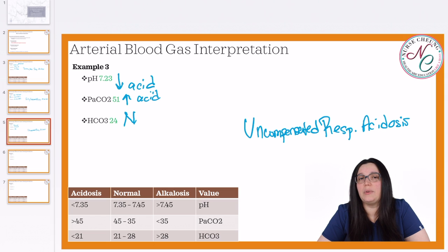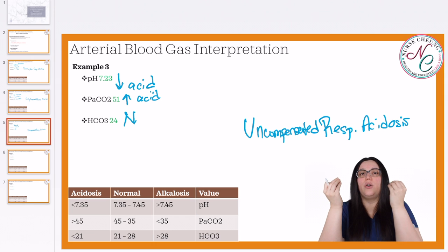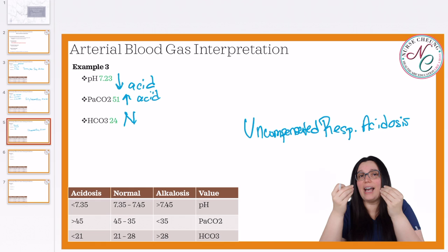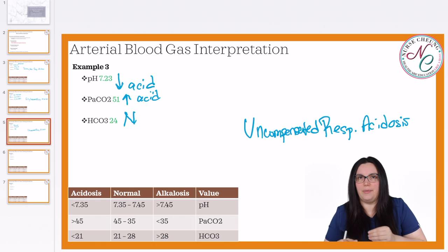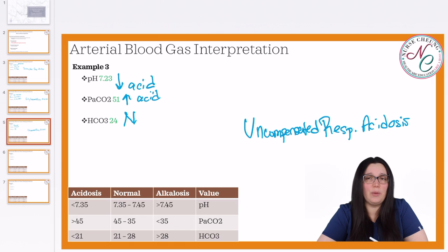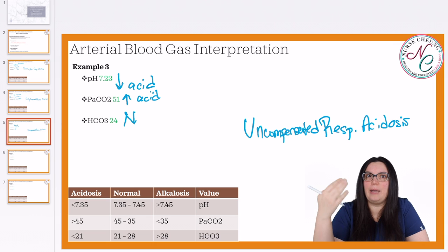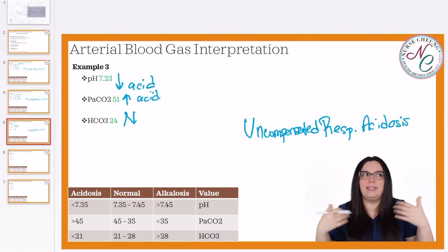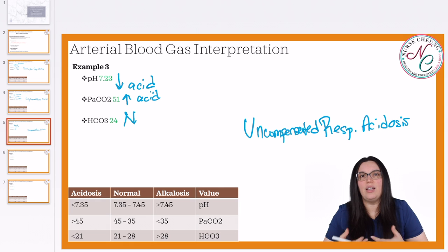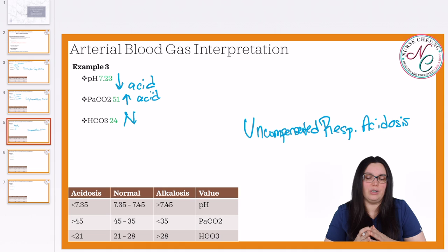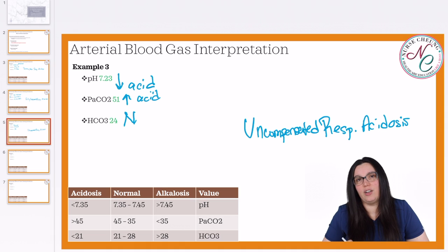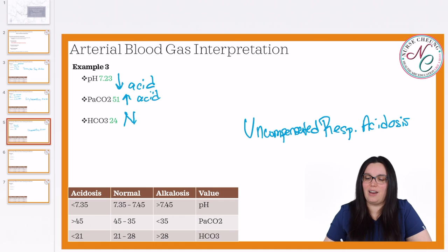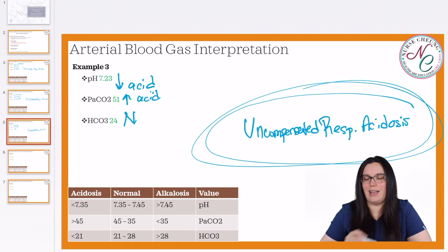For compensation, both our metabolic and respiratory components have got to be out of whack — they've got to be competing and trying to fix each other. If one is neutral, then we don't have any compensation taking place yet. Remember, our metabolic component takes a long time to start fixing issues, whereas our respiratory component can work very quickly — 10 to 30 minutes and you're going to start seeing changes in your ABG for the respiratory component. So because our HCO3 is normal and our other two numbers are out of whack, we know this is going to be an uncompensated respiratory acidosis.